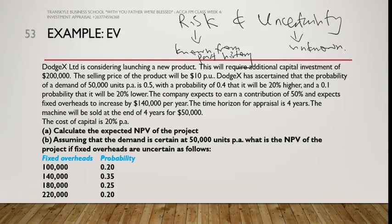There is a chance that something good or bad might happen. The expected value takes into consideration those probabilities to inform managers. Now there is this example of a company called Dodge X Limited, which is considering launching a new product.